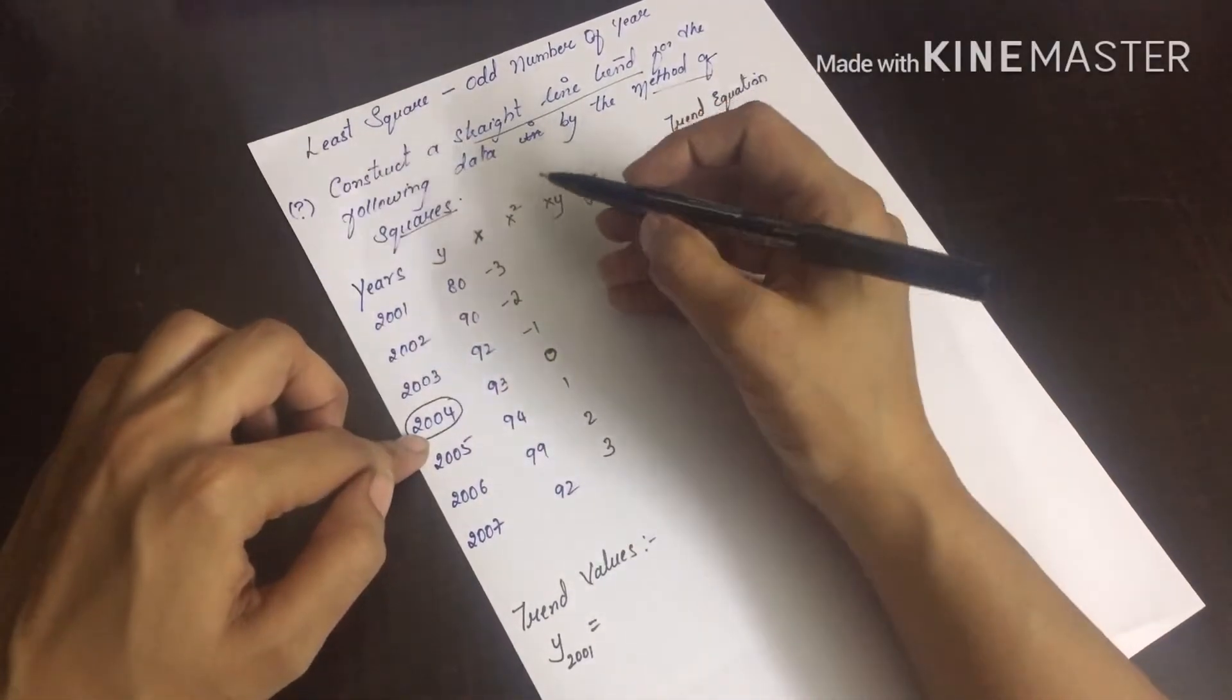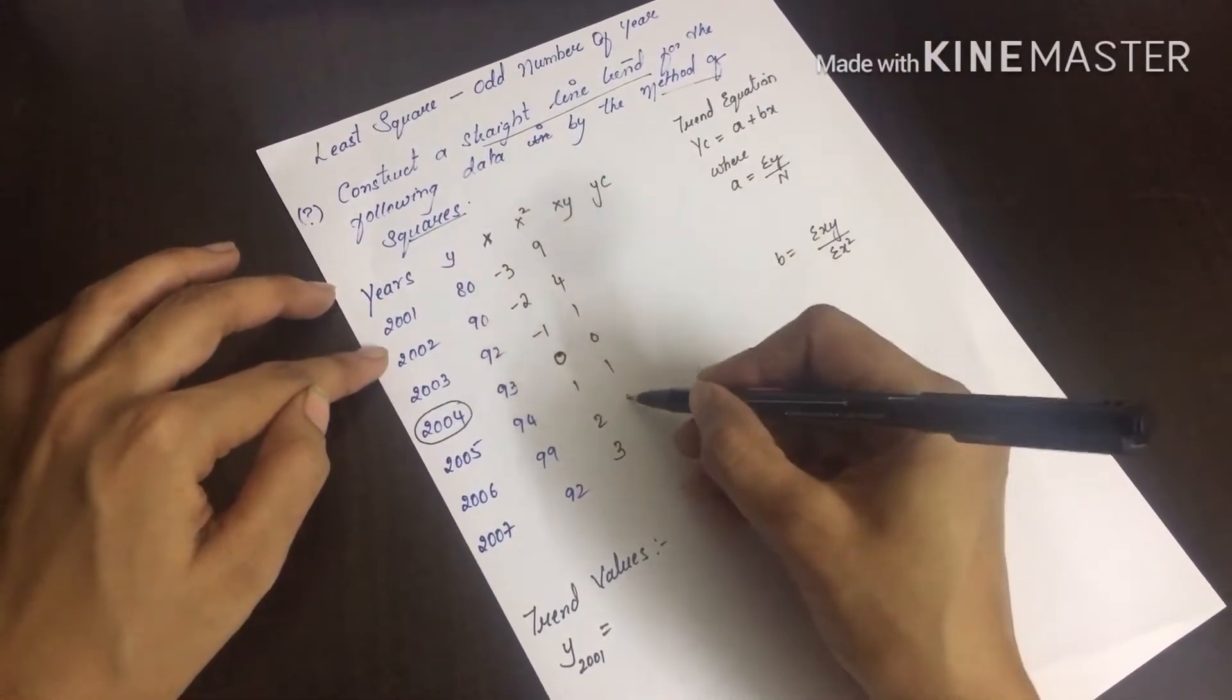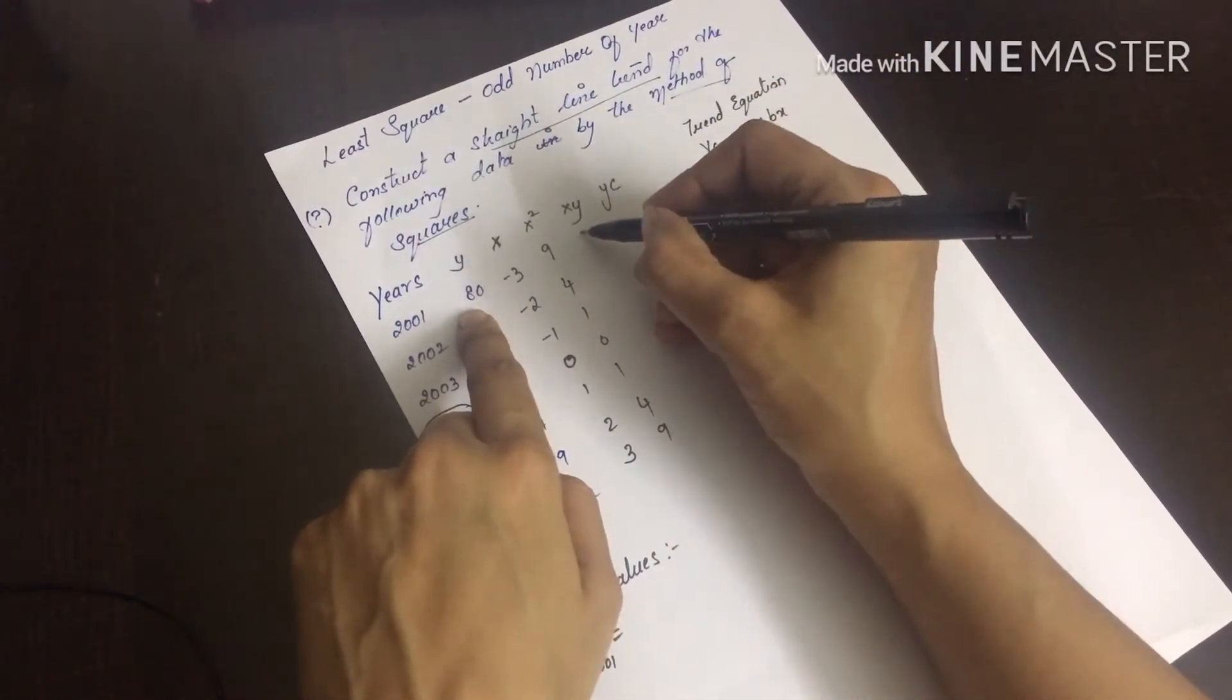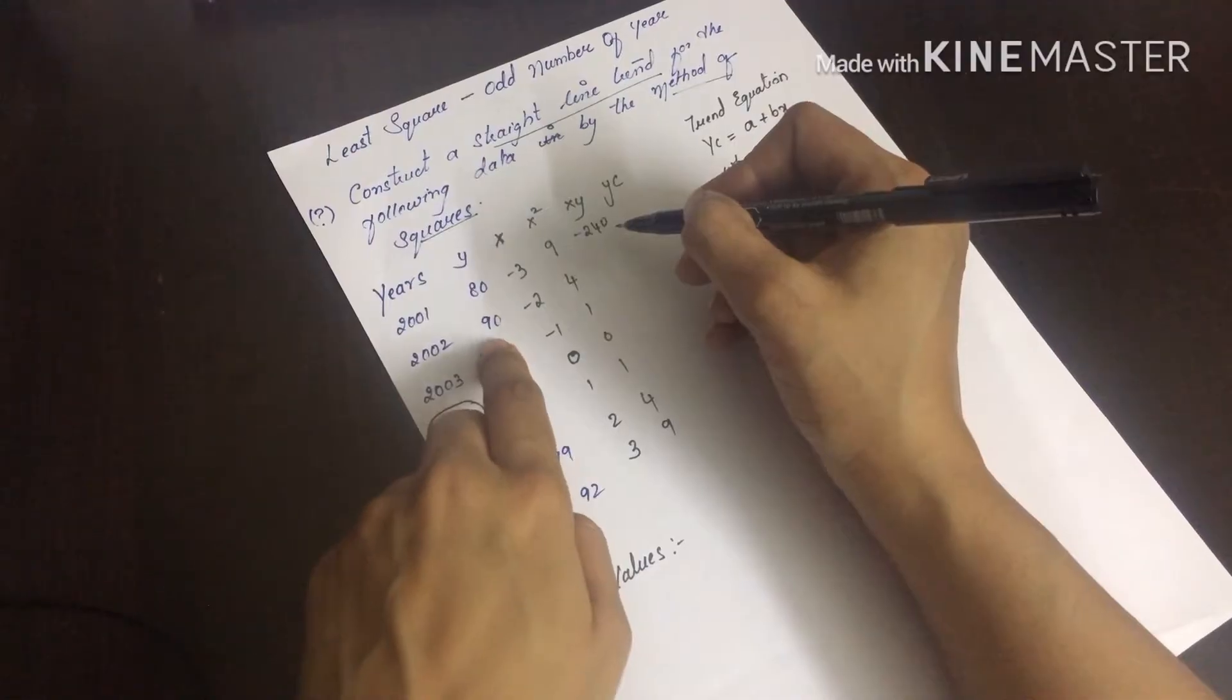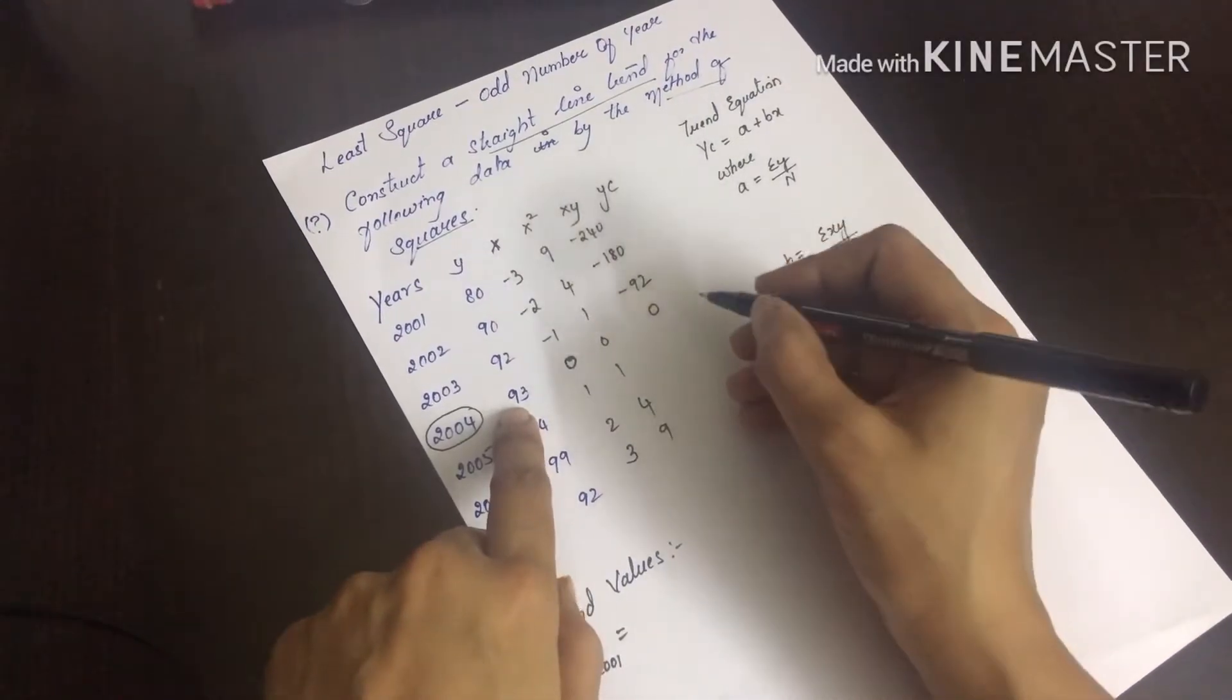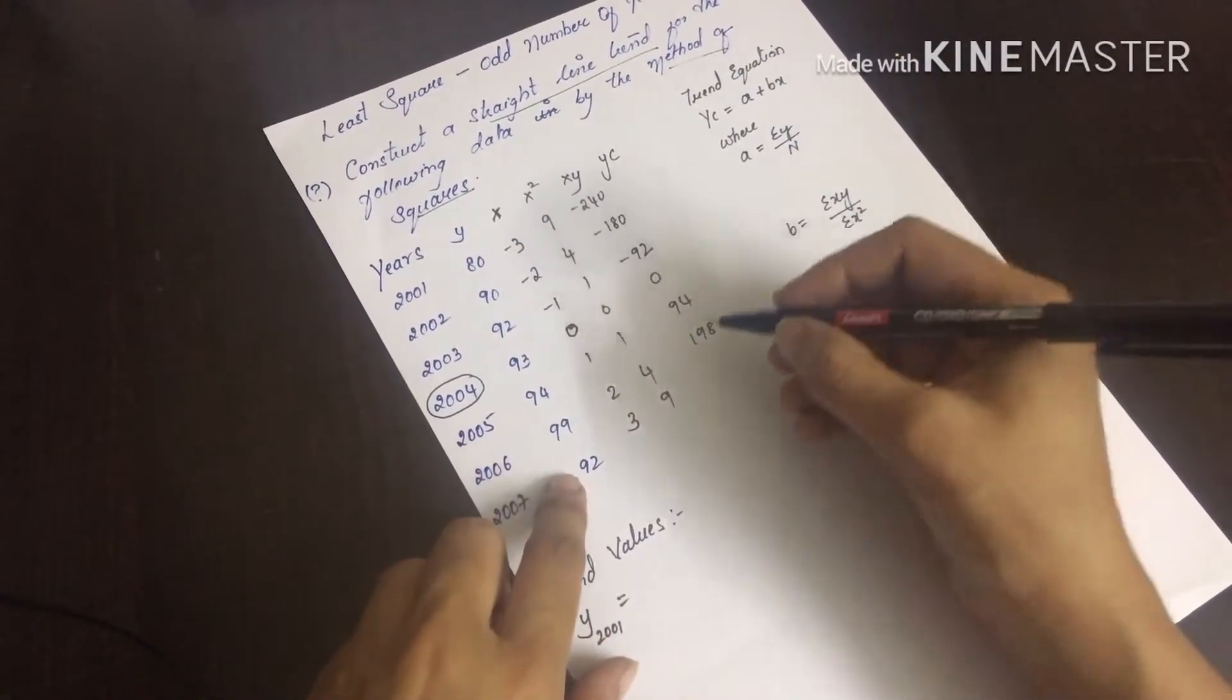Now square these values. X square is: 3 into 3 is 9, 2 into 2 is 4, 1 into 1 is 1, 0, and again 1, 4, 9. Then x into y means multiply these two: 80 into 3 is 240, minus 240 because of the minus sign. Minus 2 into 92 is minus 184, minus 1 into 80 is minus 80. Then 0, followed by 94, 99 into 2 is 198, and 92 into 3 is 276.